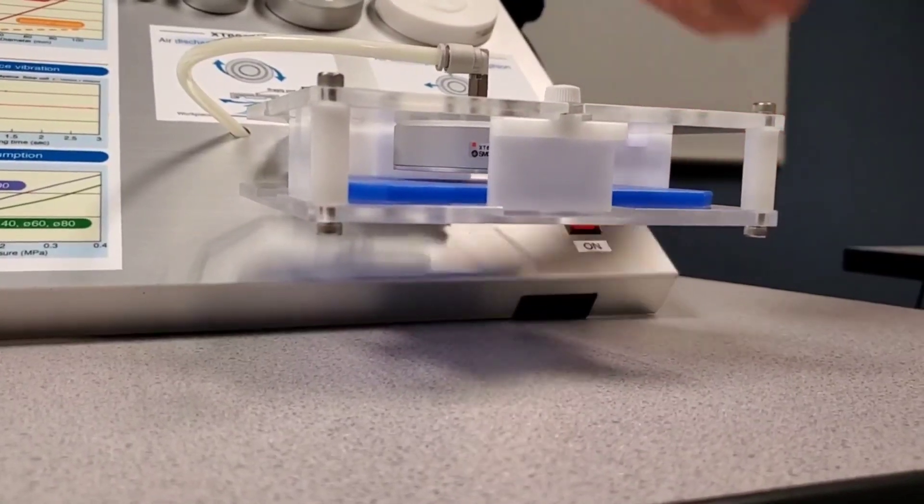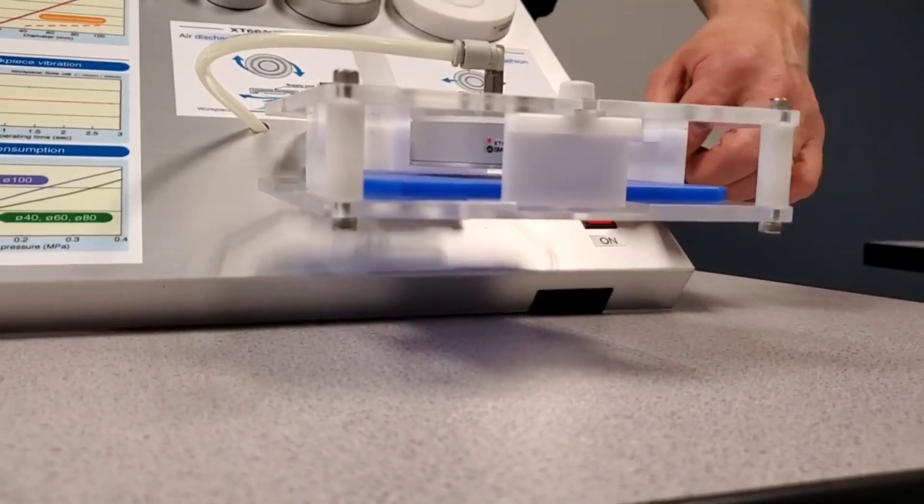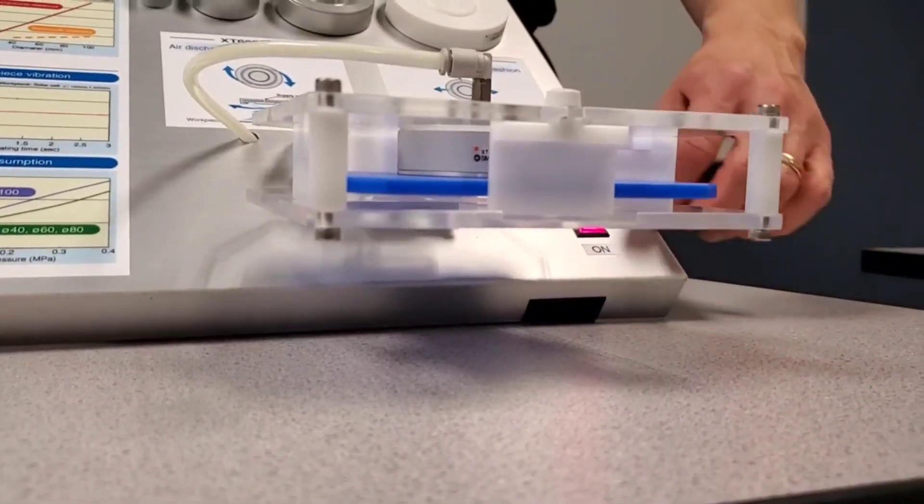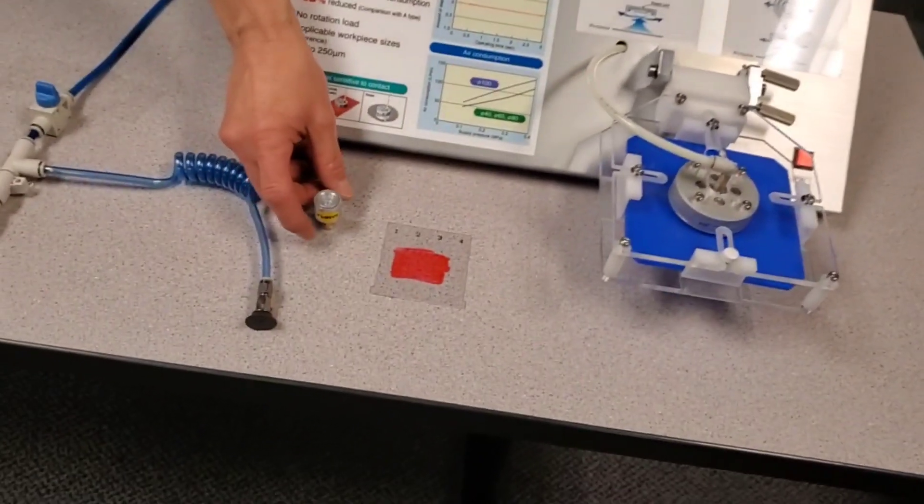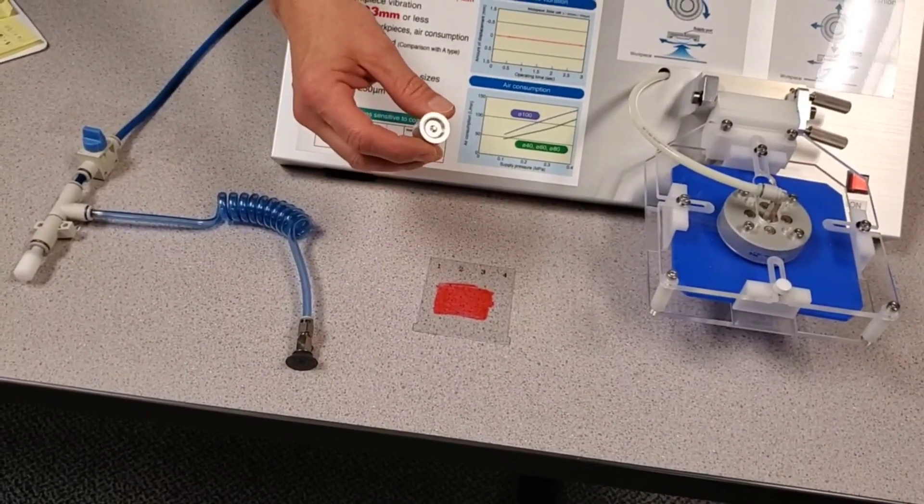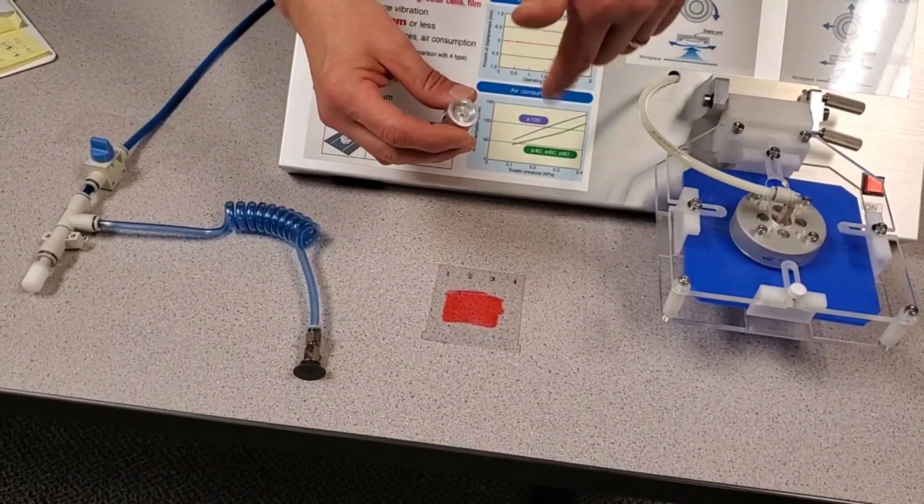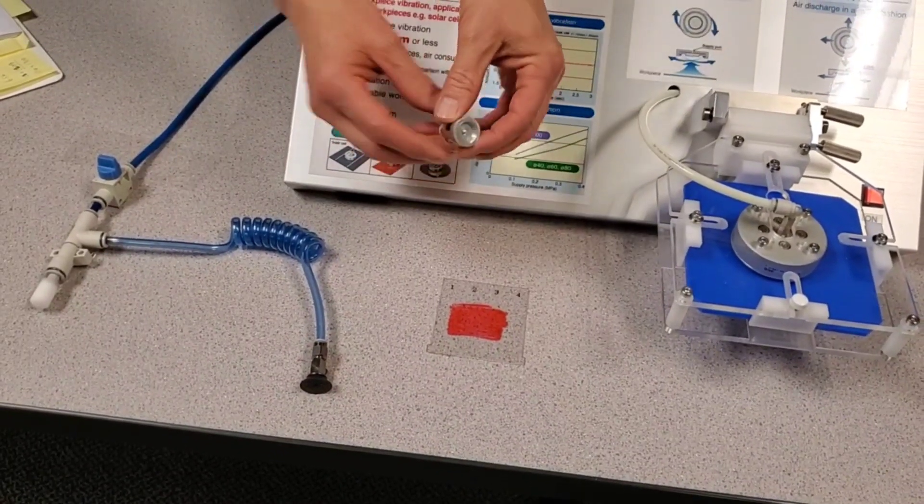Notice there's no contact even prior to the adsorption. If you look over here, we have another example of the cyclone cup. Air discharges in a circular pattern, creating negative pressure.